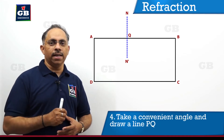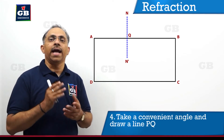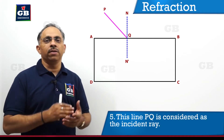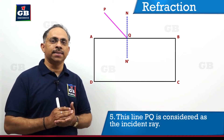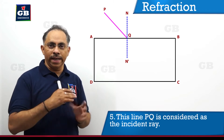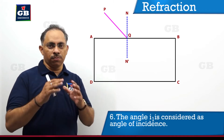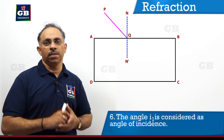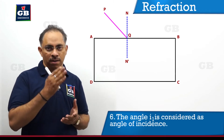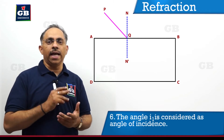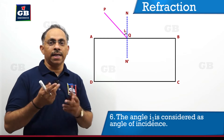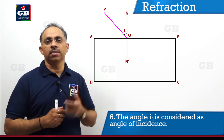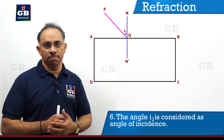We will take a convenient angle and draw a line PQ, which can be considered as the incident ray on the side AB of the glass slab. The angle between PQ and the normal NN' is marked as I1, which is the angle of incidence on the face AB of the glass slab.